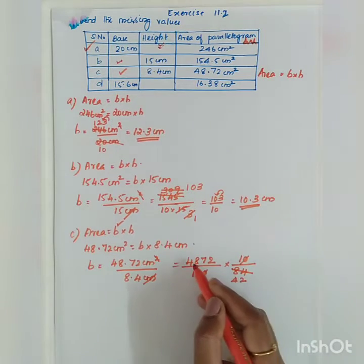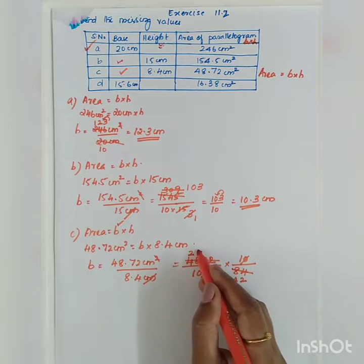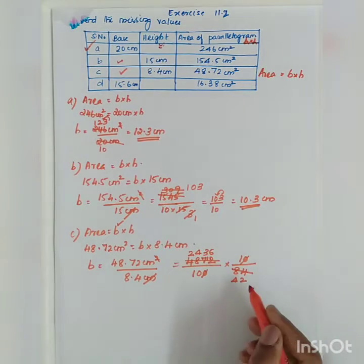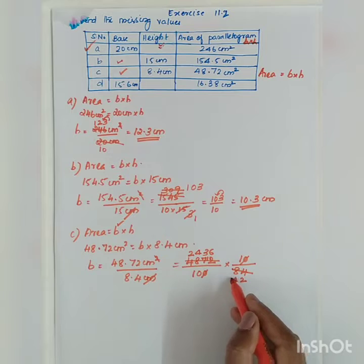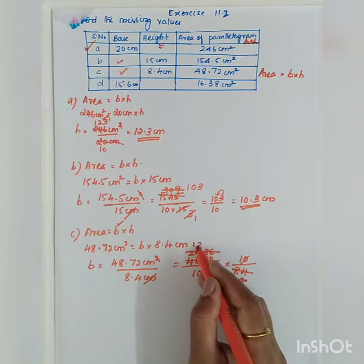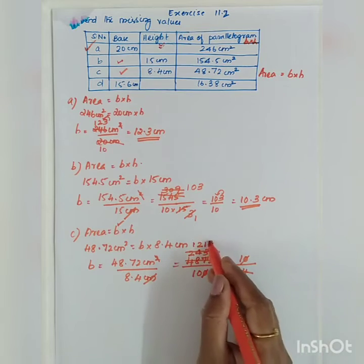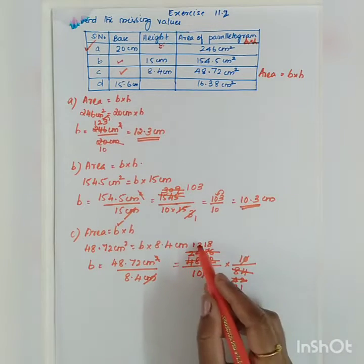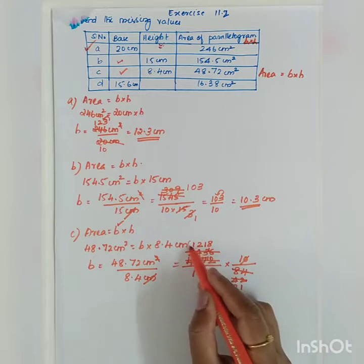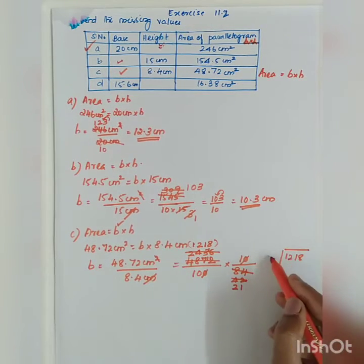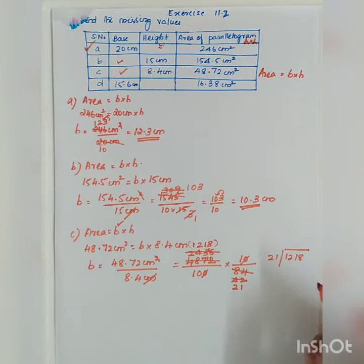Dividing by 2: 4 twos are 8, 2 twos are 4, 2 twos are 4, 4 twos are 8, 3 twos are 6 with balance 1, 6 twos are 12. Reducing again: we get 2436 divided by 42, which further simplifies to 1218 divided by 21.